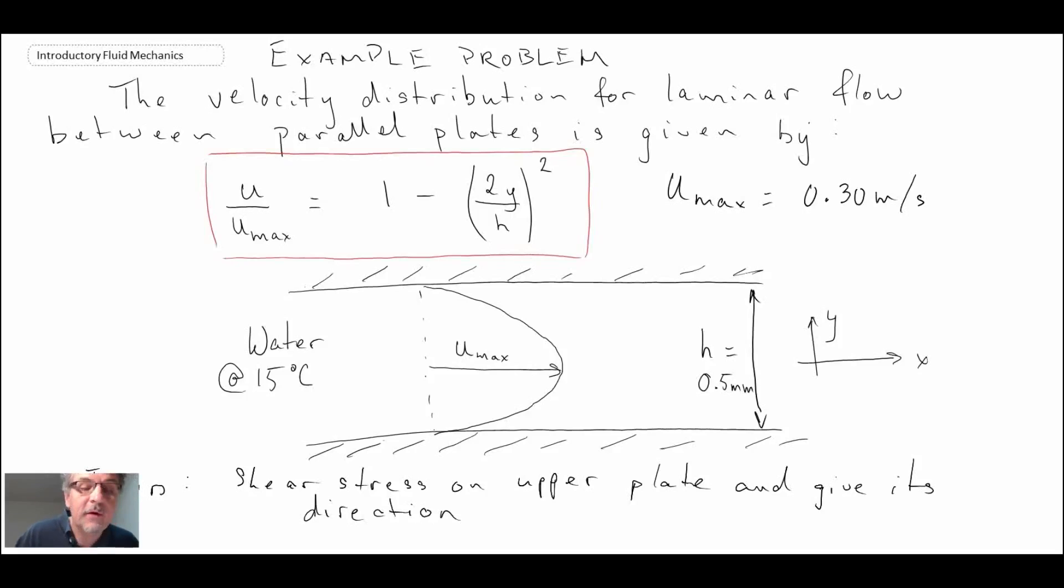What we're after is we want to determine the shear stress on the upper plate and we want to know the direction of the shear stress. How do we go about solving this? What we have in our back pocket is we know that water is a Newtonian fluid. We've also seen that tau equals mu du by dy. We have a velocity profile as a function of y. We'll have to look up the viscosity to get the proportionality constant in that equation. We can look it up for water and go about our solution.